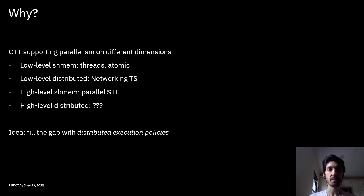We think this is important, as if we look at the current support for parallelism in C++, we really see a hole in the support for high level programming of distributed systems. We can categorize the current support for parallelism in C++ according to at least two dimensions. The first dimension is low level versus high level parallelism, and the second dimension is shared memory versus distributed memory systems.